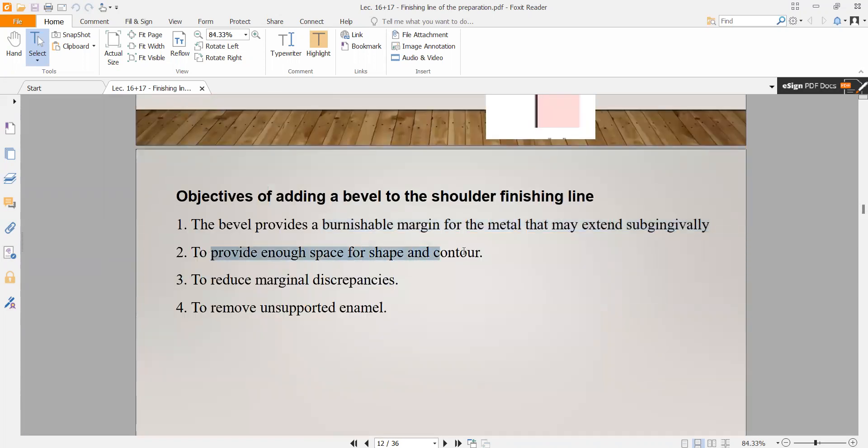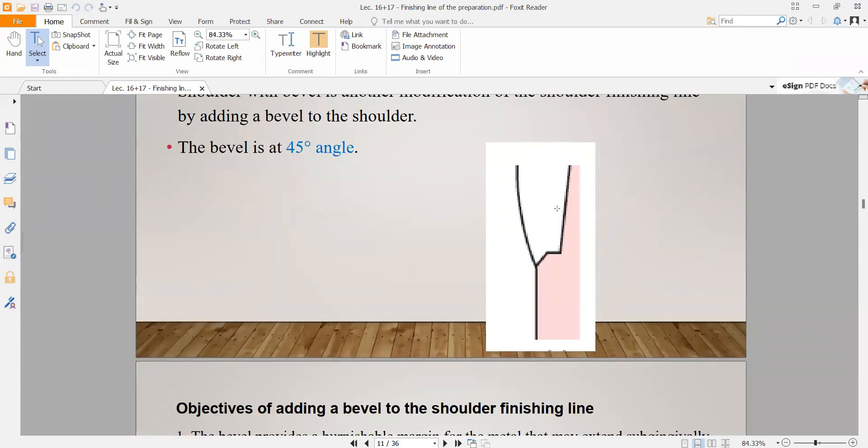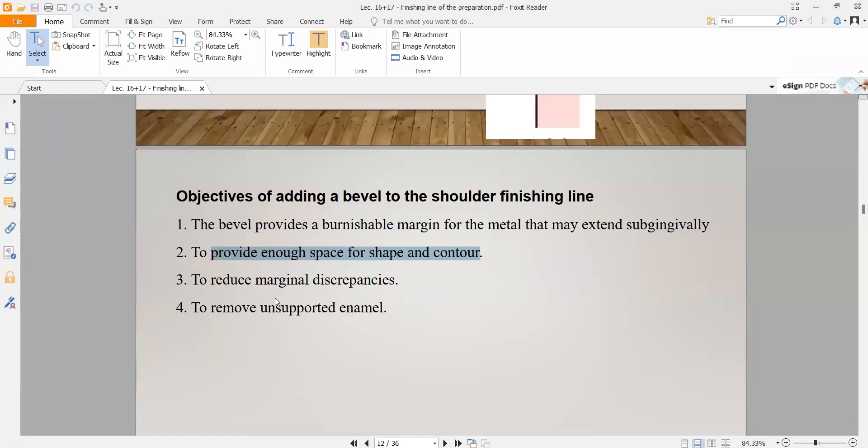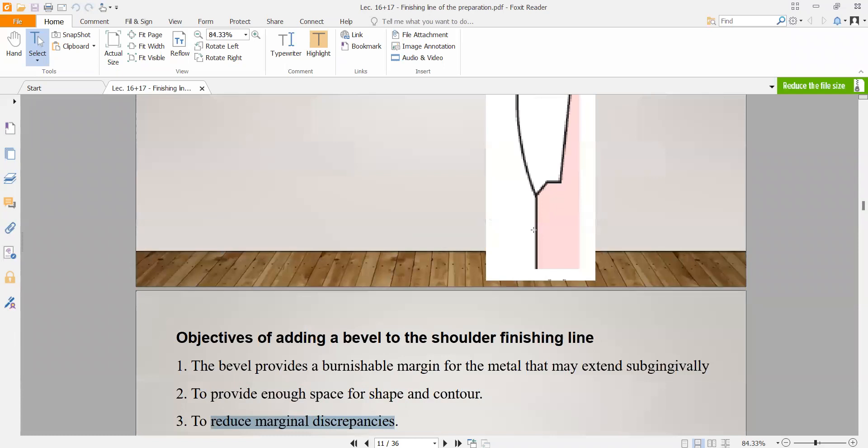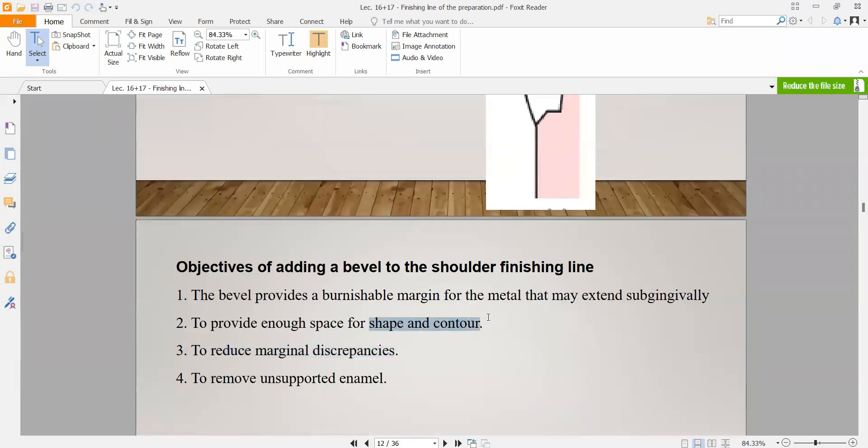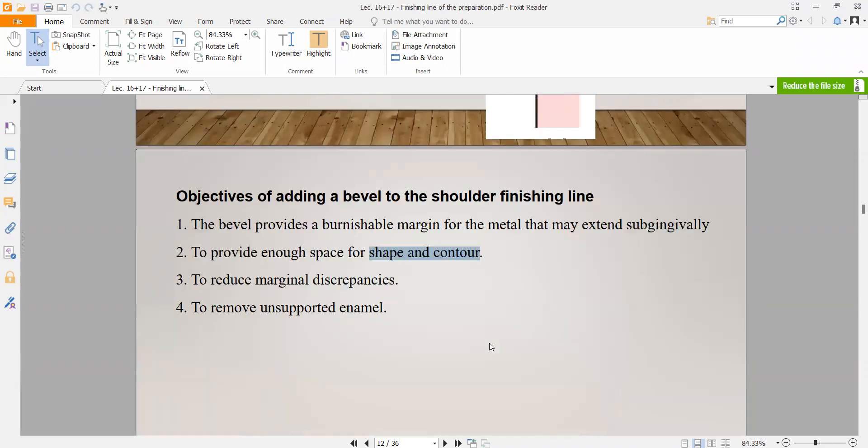First, it makes the surface more burnishable. Second, it provides enough space for shaping and contouring - it provides more space to make the contour like the original contour. It reduces marginal discrepancies. For example, let's say it's chamfer caries. When you do the preparation, the contour will be flat or defective. The contour will be damaged. When you make a bevel, you'll have enough space to do shaping and contouring of the tooth to restore the original contour.